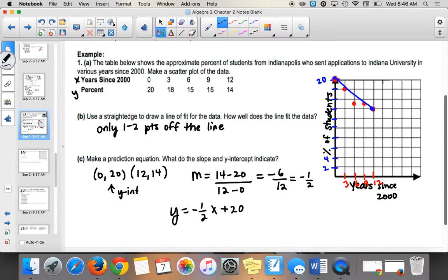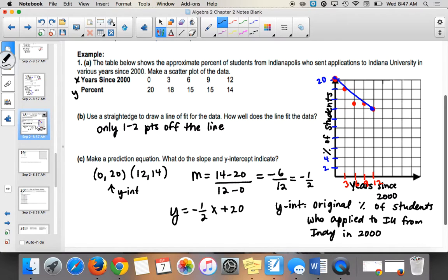So our prediction equation is y equals negative 1 half x plus the y-intercept, which is 20. So if we didn't have that y-intercept, then you'd have to do the point-slope form or you'd plug in temporarily for x and y to find b. So it says, what's the slope and the y-intercept indicate? How about the y-intercept? What does that indicate in this situation? So in the year 2000, this was the percent of students from Indianapolis who applied to IU. So that's what the 20 represents. So it's the original percent of students who applied to IU from Indy in the year 2000.